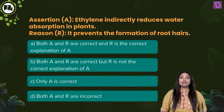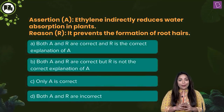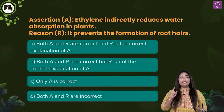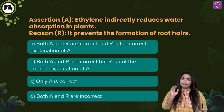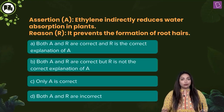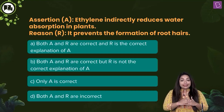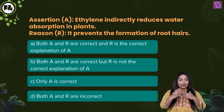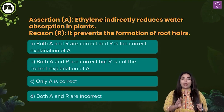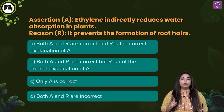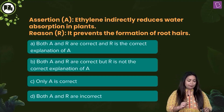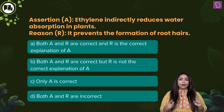An assertion and reasoning question — how are you going to approach it? The moment you look at an assertion-reasoning question, observe the statements individually first and find out whether they are both correct or not. Then go to the second step: understand whether the reason is the correct explanation for the assertion or not. Don't try to patch them up immediately — if both statements are wrong, you save yourself so much time.